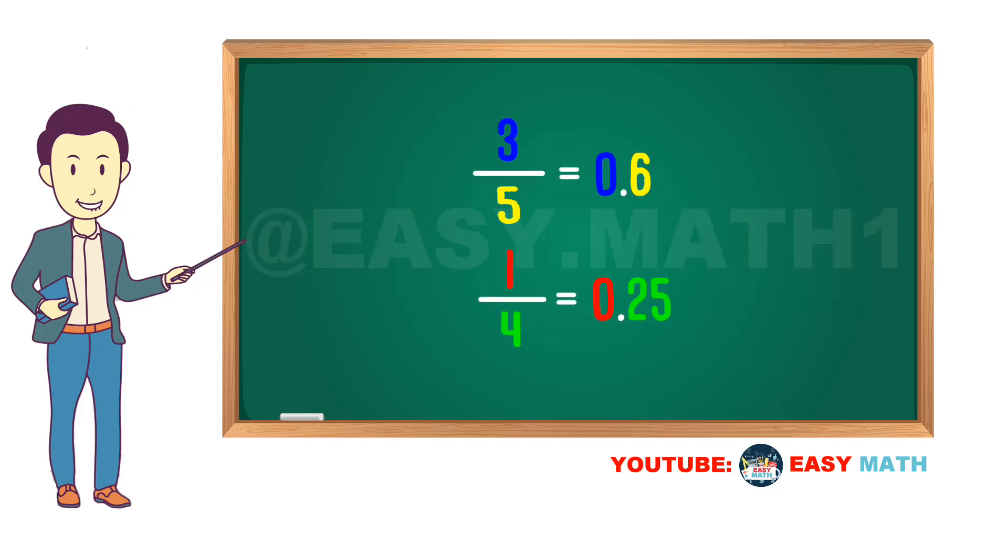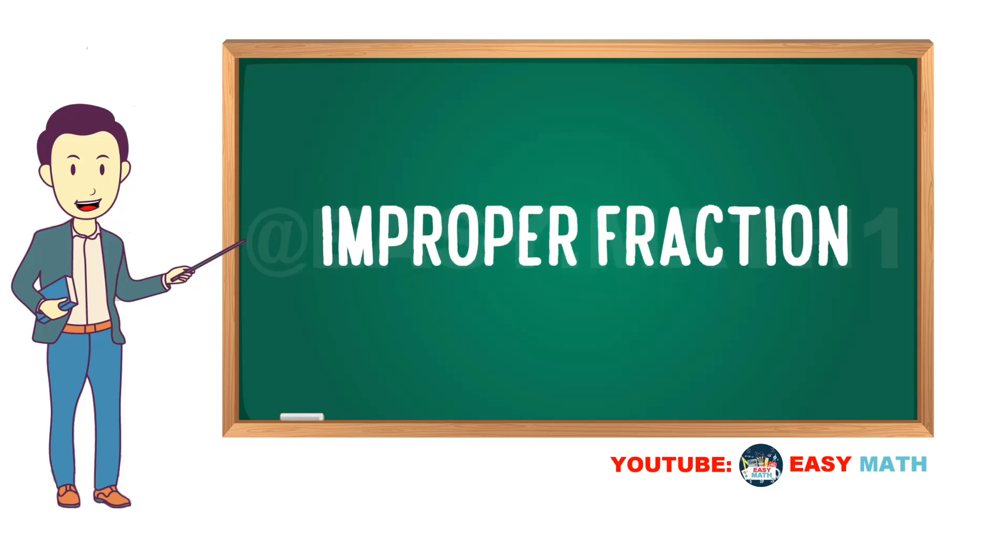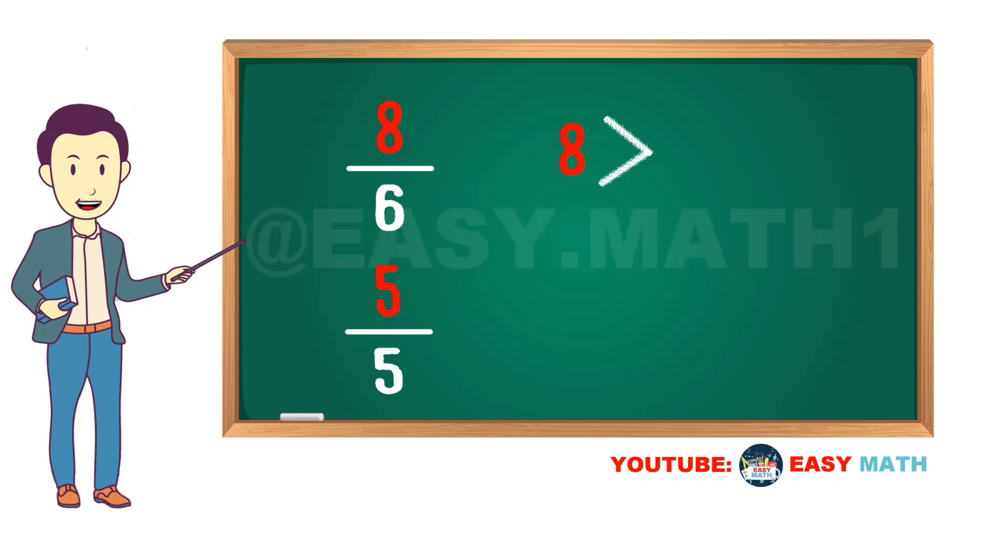An improper fraction is a fraction in which the numerator is greater than or equal to the denominator, such as six fifths, eleven quarters, and seven thirds. The value of an improper fraction is always greater than or equal to one.